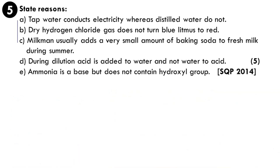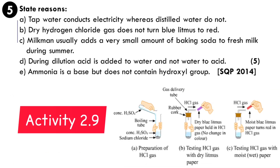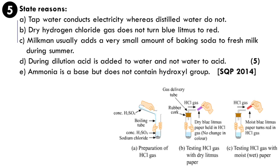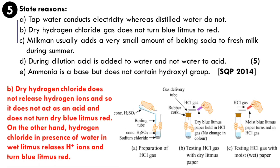Second sub-question: dry hydrogen chloride gas does not turn blue litmus red. In the preparation of HCl gas, NaCl reacts with concentrated H₂SO₄ and the gas is dried using a guard tube with calcium chloride. Dry blue litmus paper shows no color change, but moist blue litmus paper turns red. Dry HCl gas doesn't release hydrogen ions, but when in contact with moisture, HCl releases H⁺ ions, turning the litmus red. This shows that most properties of acids and bases arise from their ability to release ions.